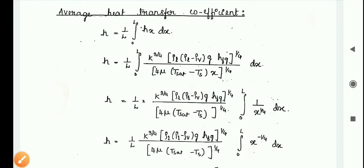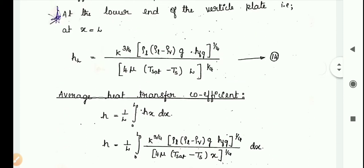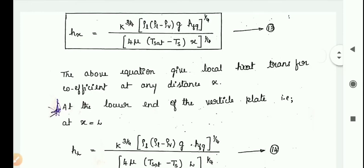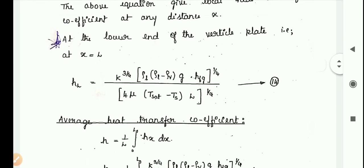In this video, the last part of the laminar film condensation on a vertical plate derivation is discussed — specifically the average heat transfer coefficient. Here h-average is given by: h = (1/L) × integral from 0 to L of hx dx. The local coefficient hx was already derived as: hx = [k³ × ρL × (ρL − ρv) × g × hfg]^(1/4) divided by [4μ × (Tsat − Ts) × x]^(1/4).